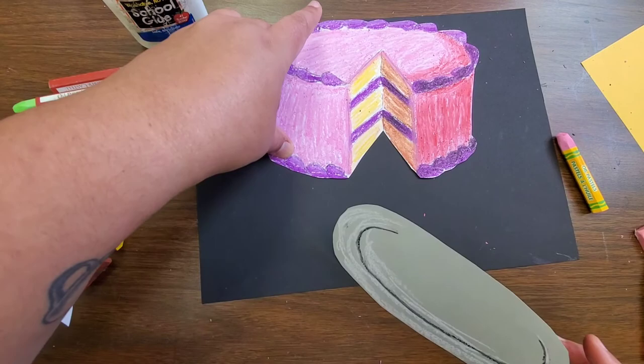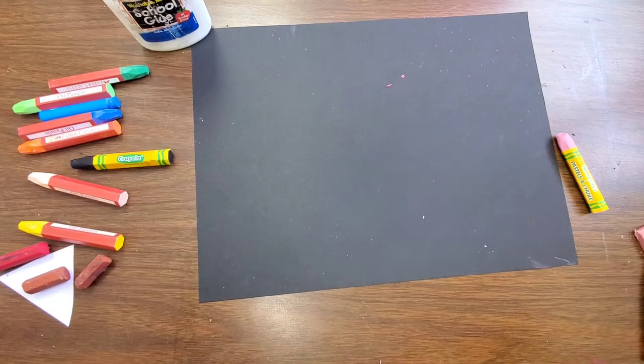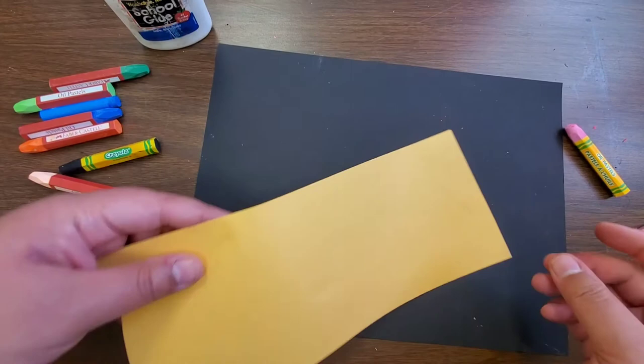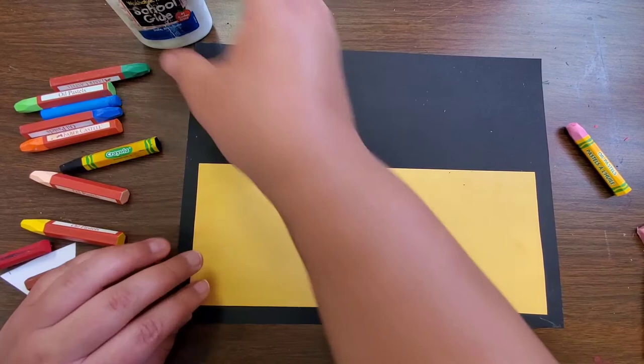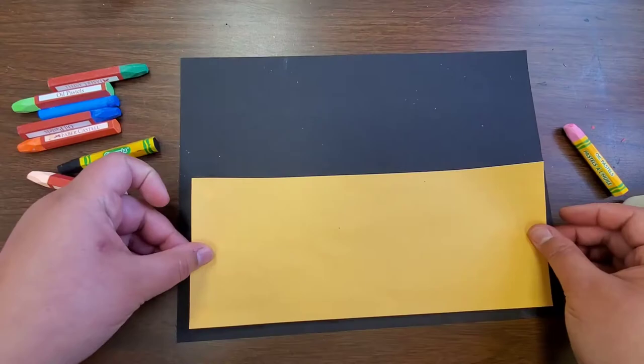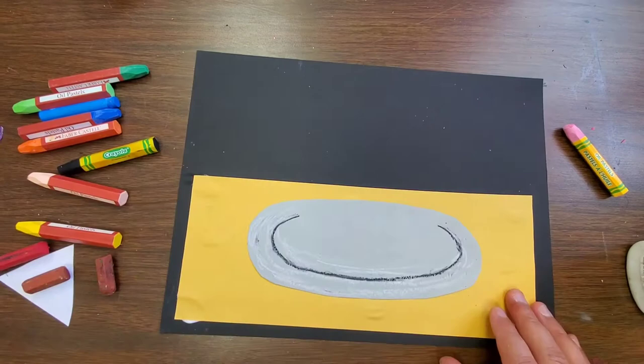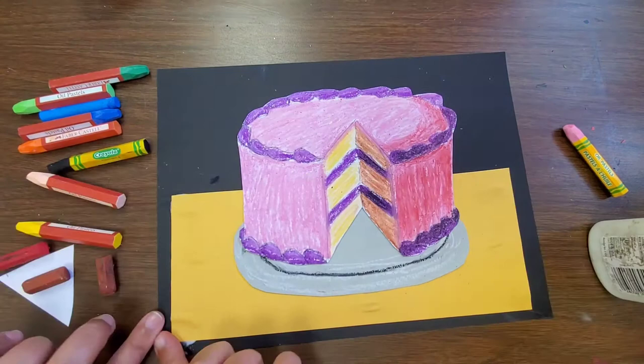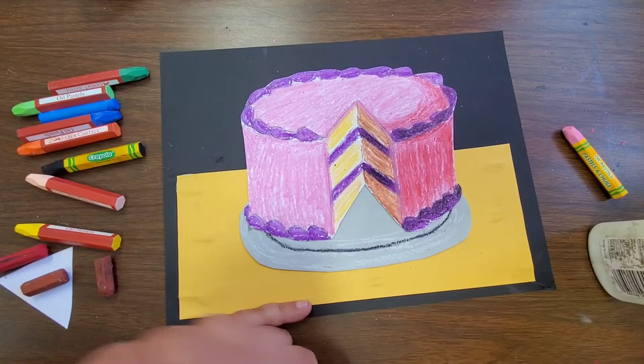Then what I'm going to do is I'm going to start to glue everything together. I'm going to glue my background about right there. I want to leave a little bit of black paper right underneath.